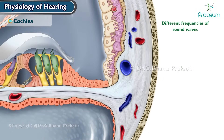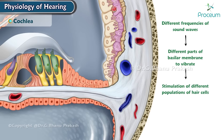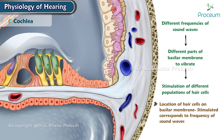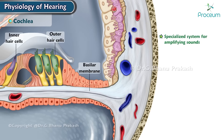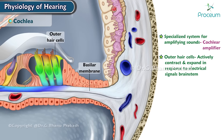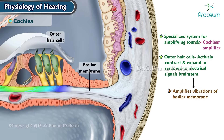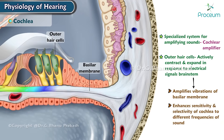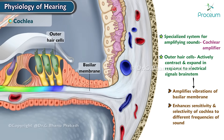Different frequencies of sound waves cause different parts of the basilar membrane to vibrate, leading to the stimulation of different populations of hair cells. The location of the hair cells on the basilar membrane that are stimulated corresponds to the frequency of the sound waves. The cochlea also has a specialized system for amplifying sounds called the cochlear amplifier, involving outer hair cells that actively contract and expand in response to electrical signals from the brain stem, amplifying basilar membrane vibrations and enhancing sensitivity and selectivity to different frequencies.